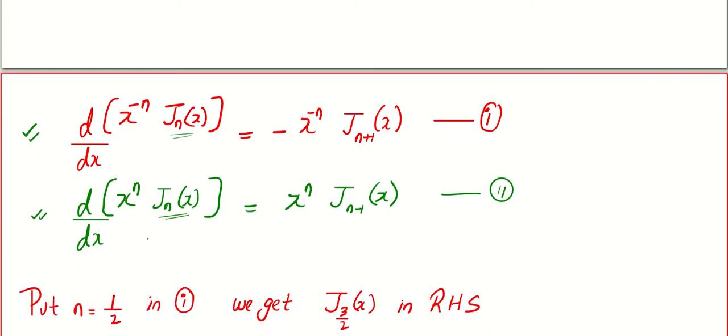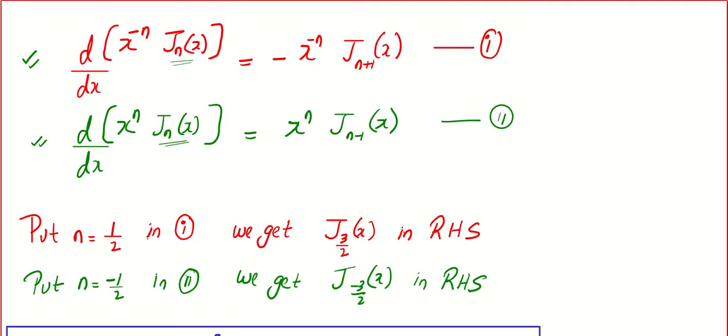The second thing you have to understand is, if you plug in n equal to 1/2 in the red color equation, that is equation number 1, you will get 1/2 plus 1, which is 3/2. And if you plug in n equal to minus 1/2, we get minus 3/2 in the second one.